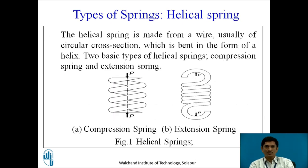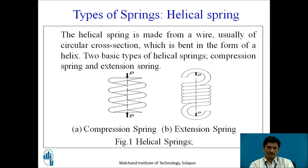Types of helical springs: the helical spring is made from wire, usually of circular cross section, bent to form a helix. Two typical types are the compression helical spring, where the force is compressive, and the extension helical spring, where the force is of pull type.